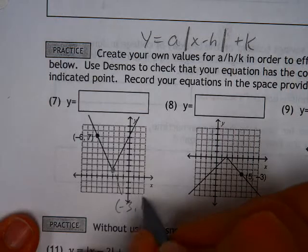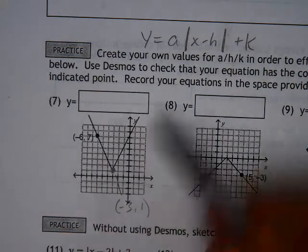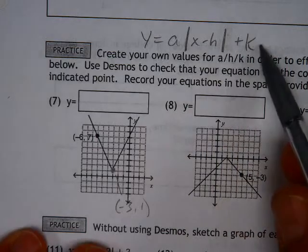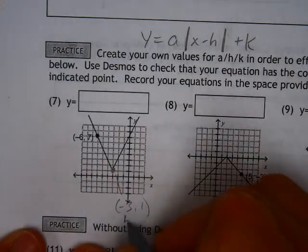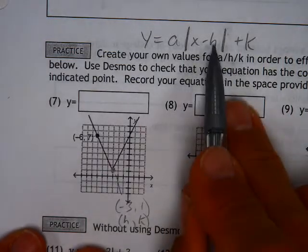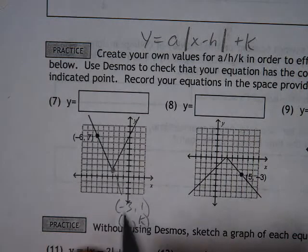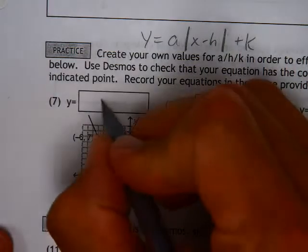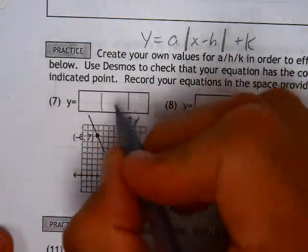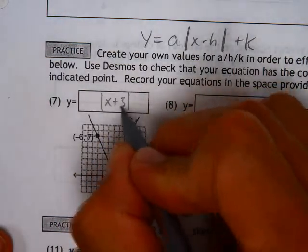So negative 3 comma 1 belongs in the h and the k value here. So this is h and this is k, and we use this as x minus h, which basically means change the sign of whatever it is that you're working with. And if this is a negative 3, then inside my little bracket deals here, I've got an x minus a negative 3. That gets a little busy. Let's call it plus.